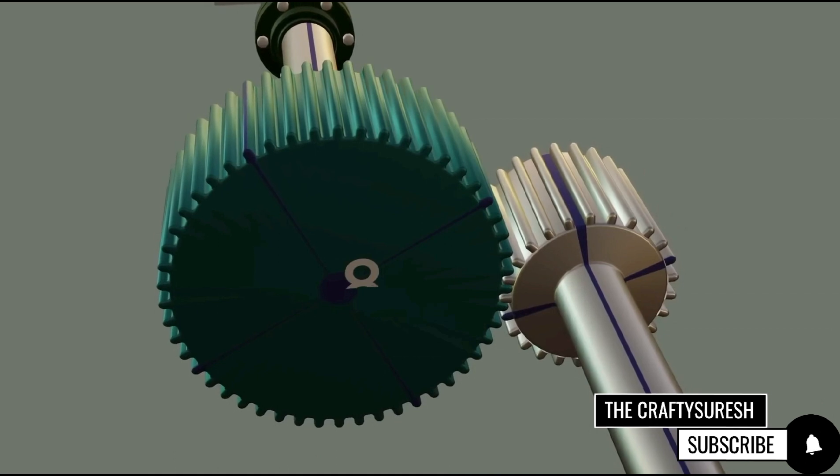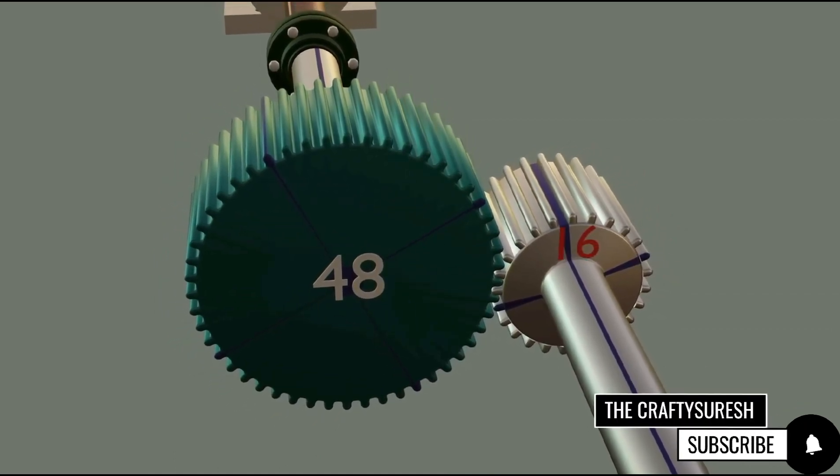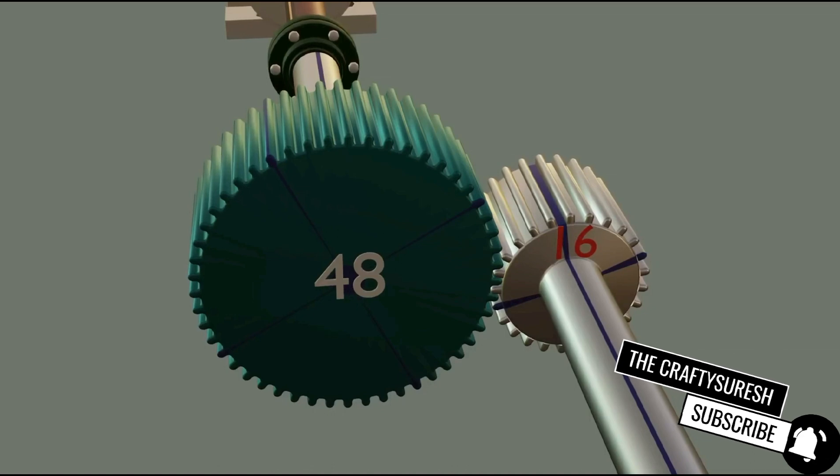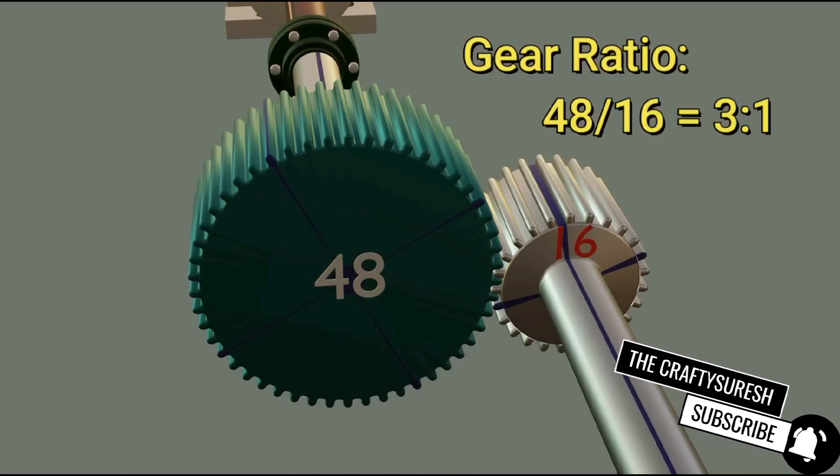Let's assume that this big gear has 48 teeth and this small gear has 16 teeth. Now if we want to find the gear ratio, we will do 48 by 16 which will give us 3 is to 1 gear ratio.